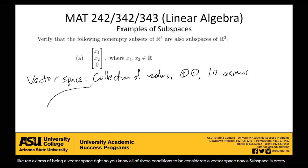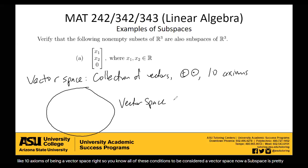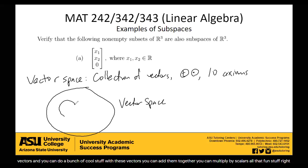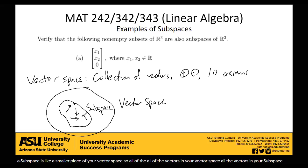So if you imagine this whole area is your vector space — this is the collection of all of your vectors. And you can do a bunch of cool stuff with these vectors: you can add them together, you can multiply by scalars, all that fun stuff. A subspace is a smaller piece of your vector space. All the vectors in your subspace — whatever they might look like, usually little arrows — exist within your bigger vector space.